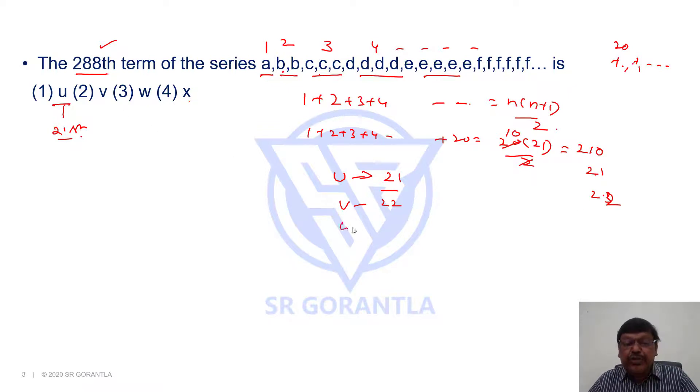If I write next w which is 23rd letter, it will be written 23 times. If I write up to w how many terms? Let us add them. You can see 23, 45, 66, 76, 276.